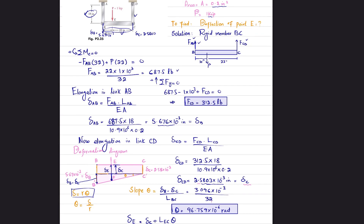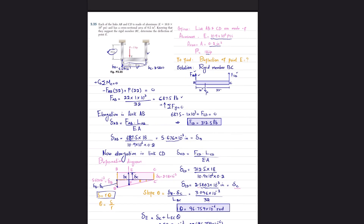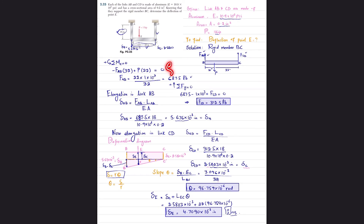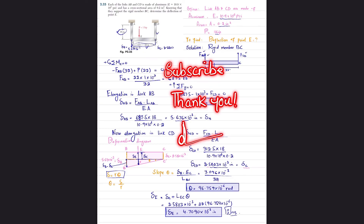Due to this loading, point B moves down and point C moves down, and this is the behavior of this rigid link — giving us the deflection of point E. I hope you have enjoyed this video. If you are new to my channel, please subscribe and press the bell icon to get notifications about the latest videos. If you have any questions, ask in the comment section. Thank you for watching.